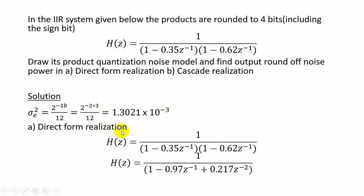First we will go with direct form realization. Given the transfer function H(z), when going for direct form realization we represent this transfer function as H(z) = 1 / (1 − 0.97z⁻¹ + 0.217z⁻²).